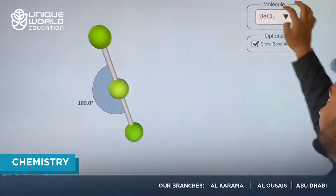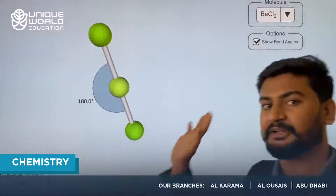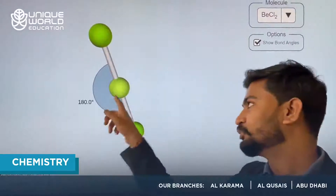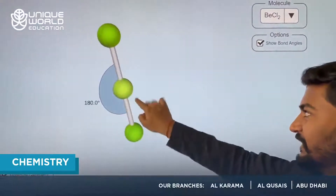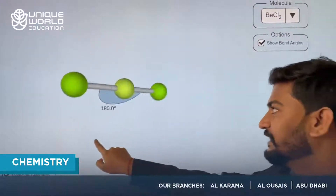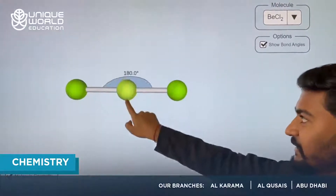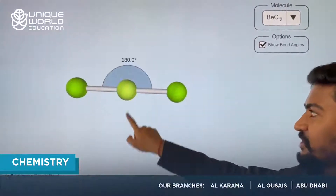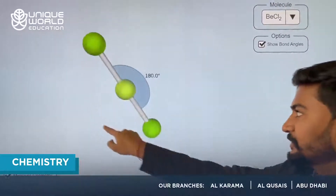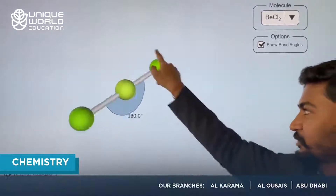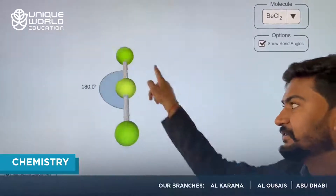The first one is AB2 type geometry. In AB2 type geometry, the molecule gets a bond angle of 180 degrees, and the shape it gets is a linear shape — it looks like someone has drawn just a straight line.